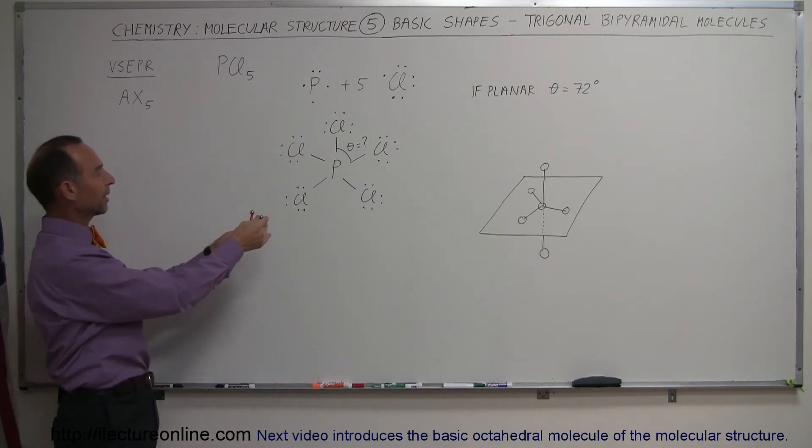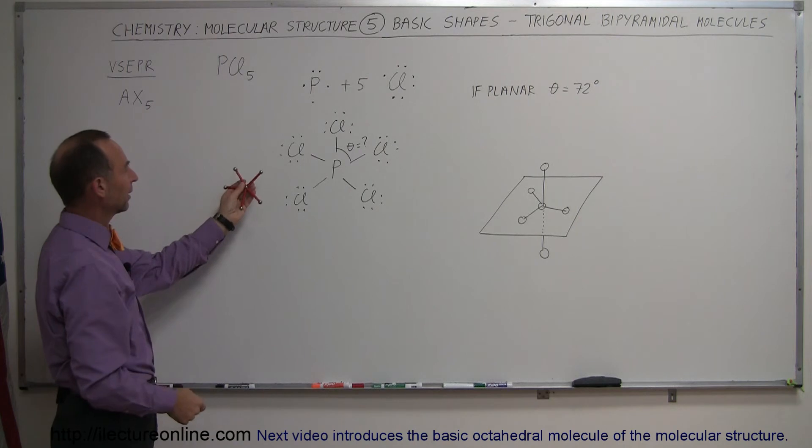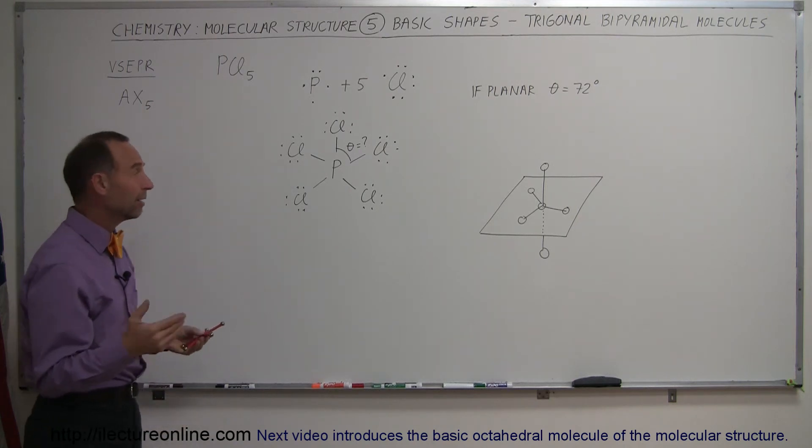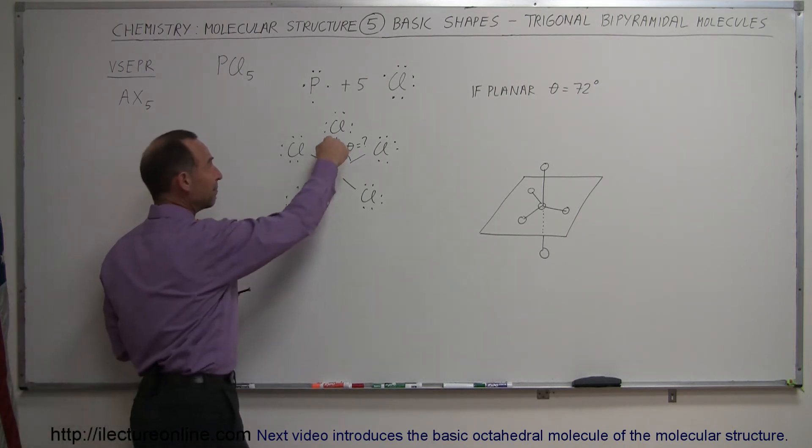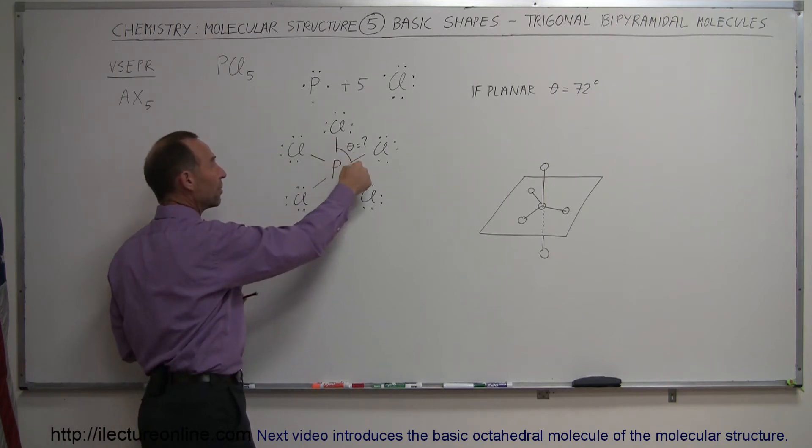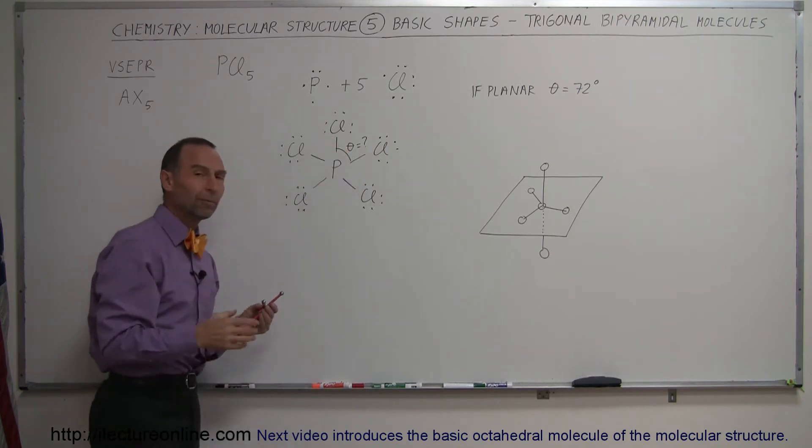Would it look a little bit like a starfish, with five appendages like that, and then it would be a planar molecule? But then again, if it was a planar molecule, the bond angle between each... because remember these electrons that are bonding.